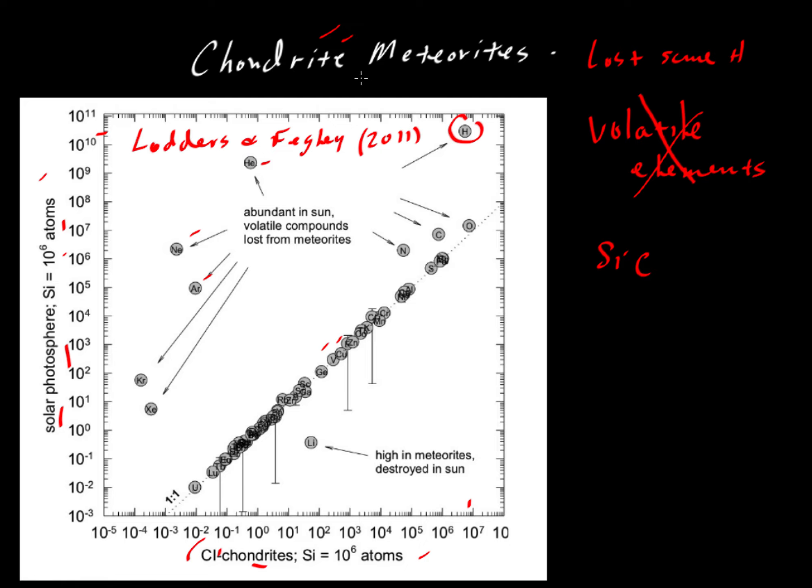And this is why we think chondrite meteorites are probably a very good model for the building blocks for making planets. That's really important to us because most of the record that we see, most of the rock record, occurs after differentiation has occurred.